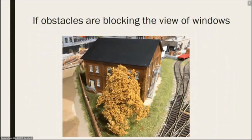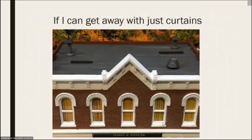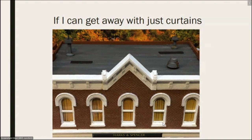If there are obstacles blocking the view of the windows, I'm not going to bother with interiors. And if I'm not going to bother, for the windows you can see at an angle, I'll just put drapes or curtains to block the inside so we don't see there's nothing in there. Most of my buildings, the main floor is the attraction. The top floor I usually put drapes in, unless there's a special building that needs offices on the top floor.